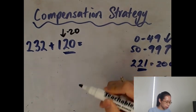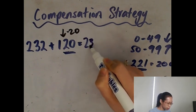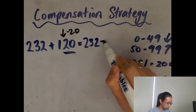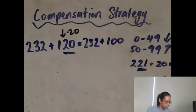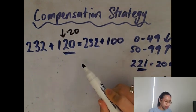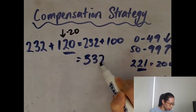So I'm going to rewrite this number sentence as 232 plus 100. Now it's a lot easier to do. So 232 plus 100 is 332.